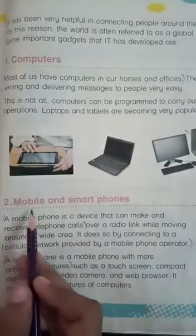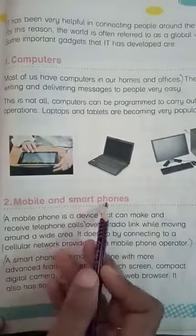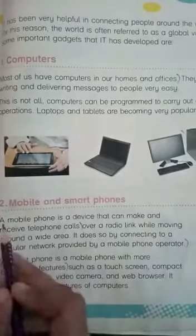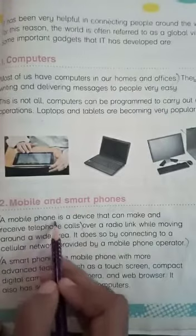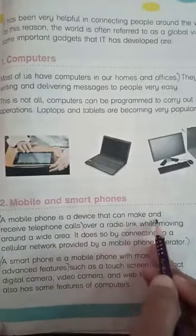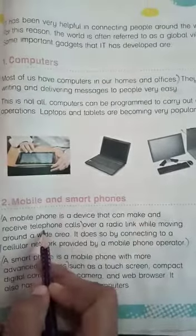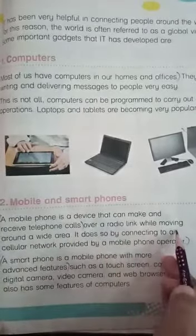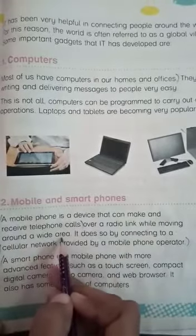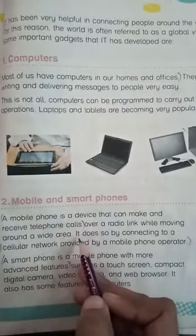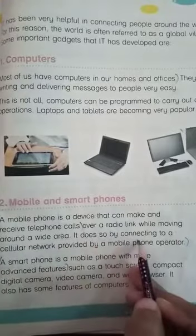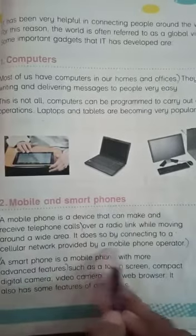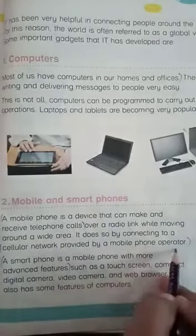Now we will study about mobile and smartphones. A mobile phone is a device that can make and receive telephone calls over a radio link while moving around a wide area. It does so by connecting to a cellular network provided by a mobile phone operator.